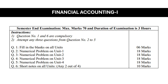Question No. 2 is a numerical problem on Unit No. 1, and that is for 18 marks. The numerical problem will be asked on Unit No. 1 of the Financial Accounting 1 syllabus. Unit No. 1 is amalgamation of partnership form. Therefore, this compulsory problem will be asked for 18 marks.